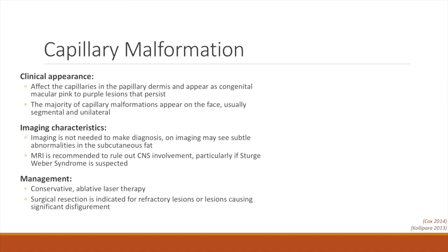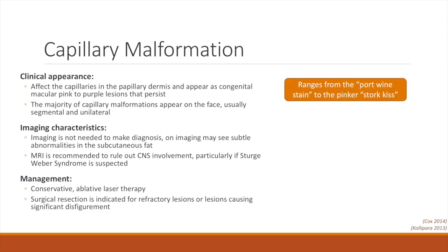Capillary malformations are a type of vascular malformation and represent what we commonly call birthmarks. These lesions affect capillaries in the papillary dermis and can range in color from light pink, such as the classic stork kiss lesion, to the purple-red port wine stain. These lesions are common on the face and are also often segmental and unilateral. Clinically, capillary malformations are not significant, but workup and treatment is warranted due to the association with syndromes such as Sturge-Weber or for cosmetic reasons.